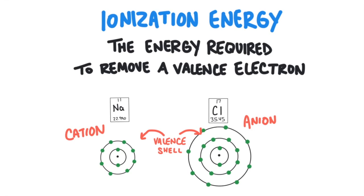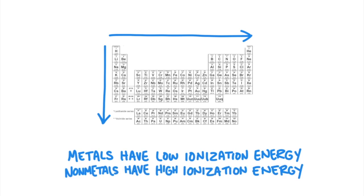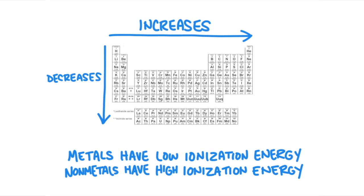Ionization energy is the energy required to remove an electron from the valence shell. The greater the ionization energy, the more difficult it is to remove an electron. Metals have low ionization energies — it's easier to remove electrons from a metal than from a nonmetal. Nonmetals have high ionization energies; it's more difficult to remove an electron from a nonmetal because they would rather gain electrons, just like chlorine. As you move from left to right across a period, the ionization energy will increase. As you move down a column, the ionization energy will decrease, because you add a new energy level each time, so the valence electrons are further and further away from the nucleus and further from the positive charge pulling on them — making it easier to remove an electron. So fluorine has a higher ionization energy than boron.